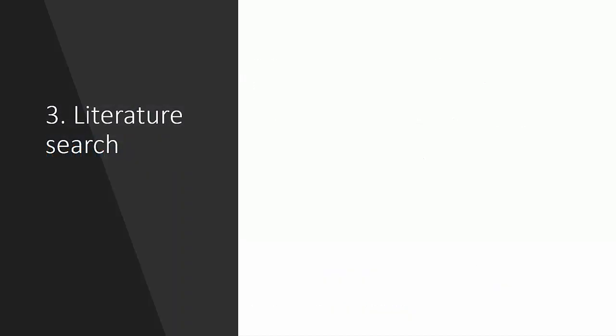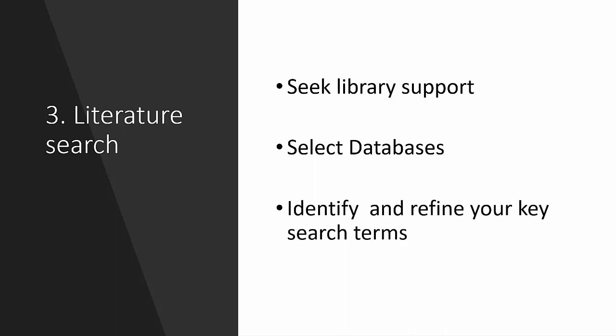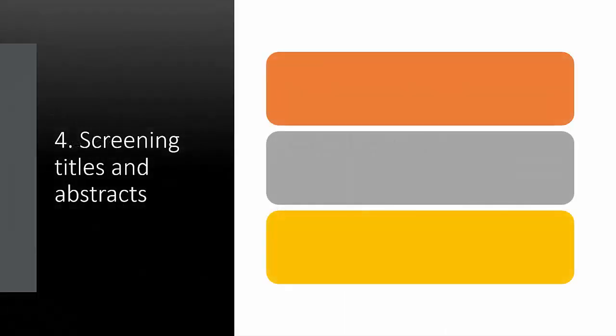On to step three of our systematic review journey: the literature search. If you've not already done this, now would be a good time to consult your university or college library in order to upskill yourself ahead of this crucial stage. You need to find out which are the most appropriate databases to access — your library specialist can certainly help you. In nursing, for example, CINAHL is a key database, but it should certainly not be the only one you consult. In order to carry out a systematic and repeatable search, you must first establish then refine your key search terms.